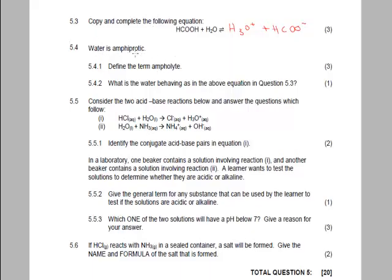Now it says, water is amphiprotic. Define the term ampholyte. An ampholyte is a substance which can act as both an acid or a base, depending on the situation. So in this case above, where you've got HCOOH plus water, this is acting as an acid, and water is acting as a base. Oh, and there's a question. It says, what is the water behaving as in the above equation, and it's acting as a base.